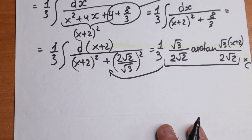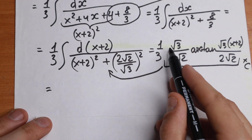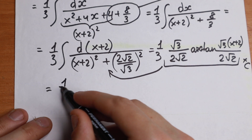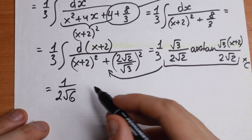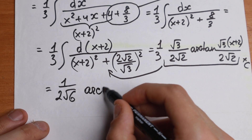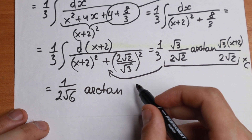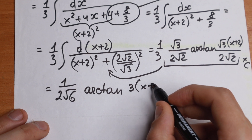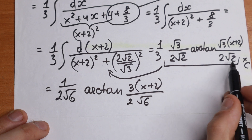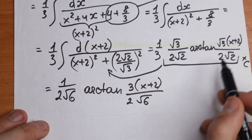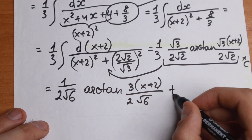Let's simplify this at the end. Multiplying through, we get 1 divided by 2 square root of 6 times arctangent of (3x plus 2) divided by 2 square root of 6, plus C. Multiplying both sides by square root of 3 gives us 3 in the numerator argument and square root of 6 in the denominator.